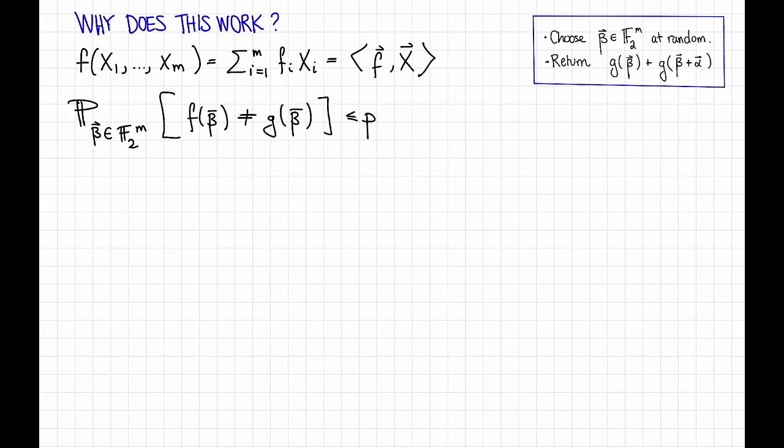That's because, by assumption, f and g differ in at most a p fraction of places, and this is strictly less than a quarter.